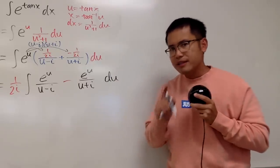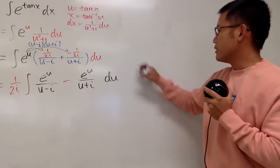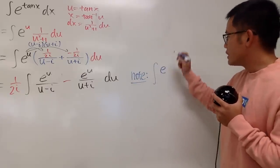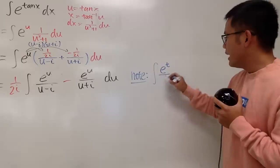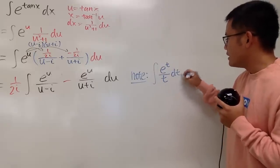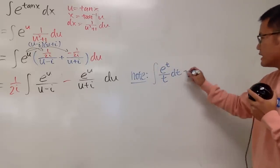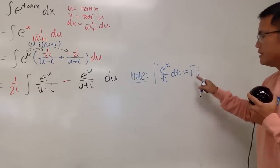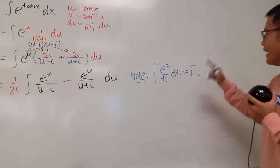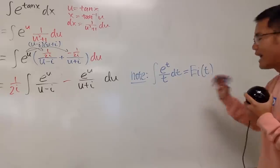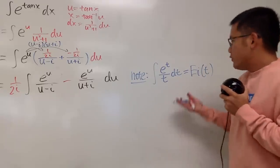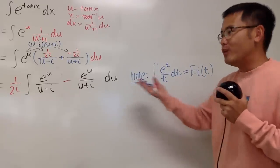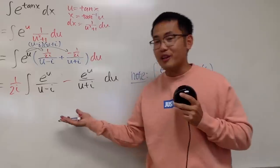Now, a note: whenever we are integrating e to some variable t over t, with dt, we can use a special function to answer it — namely Ei, the exponential integral function, with input t. So if we are willing to accept this as the answer for this kind of integral, then we can finish this question nicely.